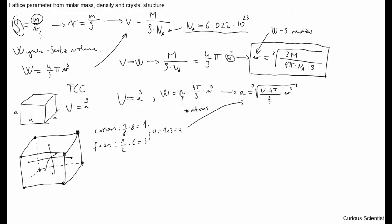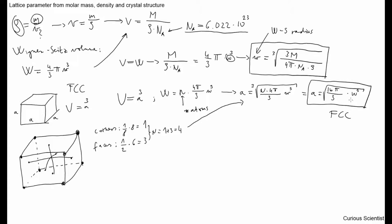Using N equals 4, we now know that A equals (16π/3)^(1/3) times W. So we now know the lattice parameter, or lattice constant, for an FCC material using the density, the molar mass, and some geometry. But we can go further.